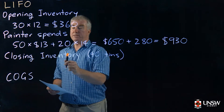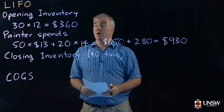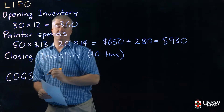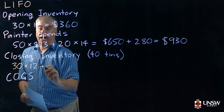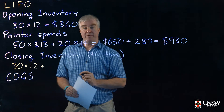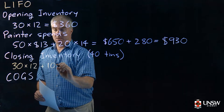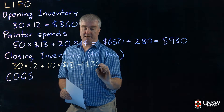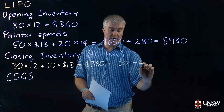The difference is the closing inventory. Instead of assuming the 40 tins are our newest tins, we assume they are our oldest tins. The oldest tins are the 30 we started with, so 30 times $12, plus we still have 40 minus 30 equals 10 tins to account for — those are the next oldest, bought at $13 each. So that's 10 times $13, giving us $360 plus $130, which equals $490.